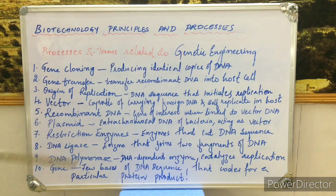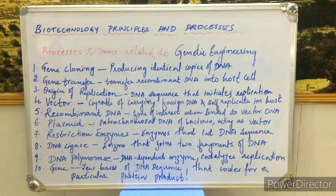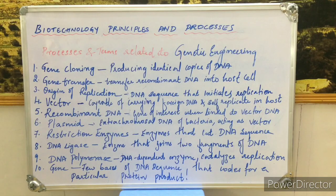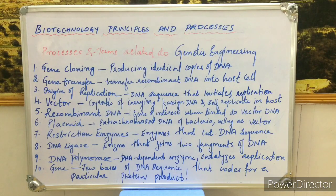We are going to see what is exactly genetic engineering. Genetic engineering is also known as recombinant DNA technology. It deals with the manipulation of genes in an organism — altering the genetic composition by either removing a gene or inserting another gene in order to change the genetic composition and produce useful products in large amounts.